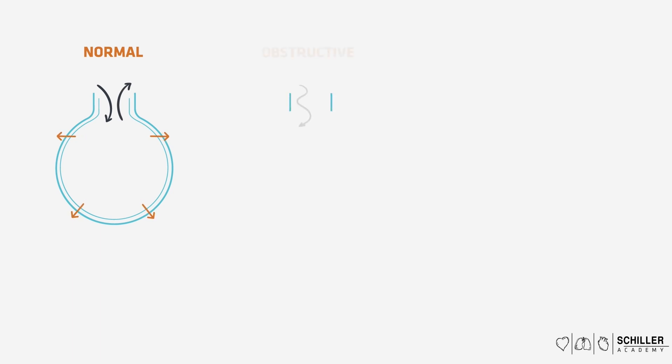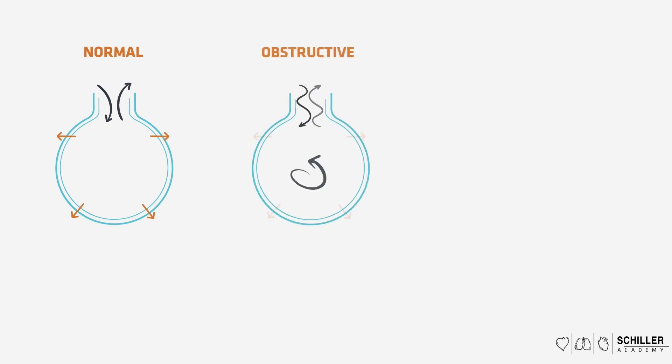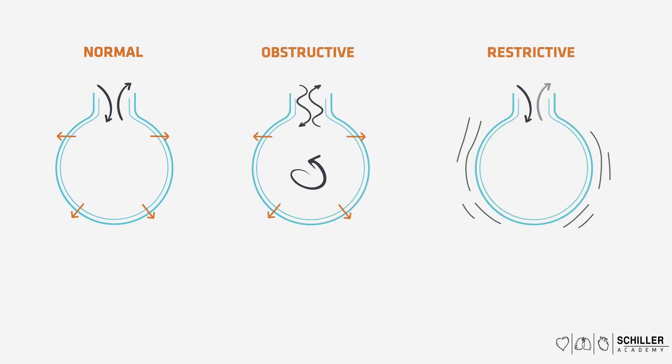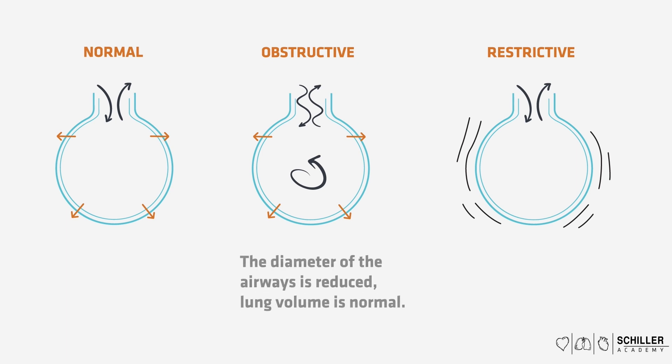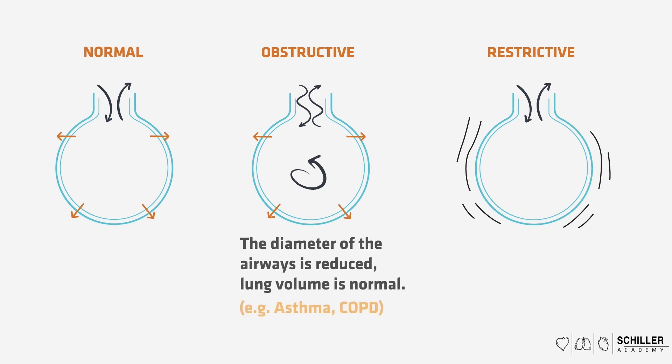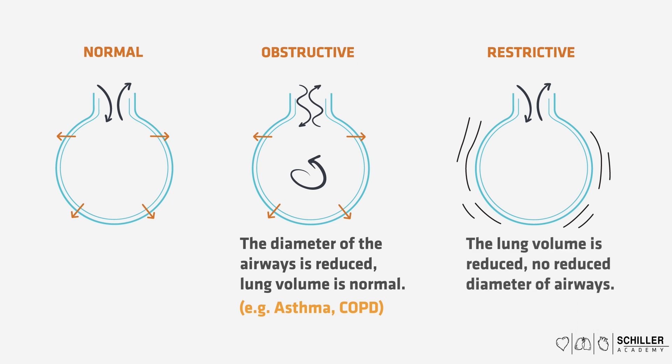In this video, we're going to look at spirometry and the differences between normal, obstructive lung disease, and restrictive lung disease. Obstructive disease means that the diameter of the airways is reduced, but the lung volume remains normal. Restrictive disease means that the lung volume is reduced, but the diameter of the airways stays normal.